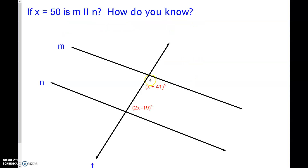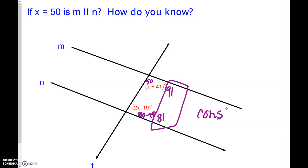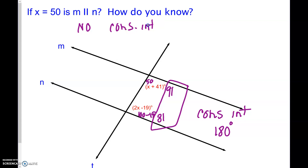Let's put 50 in. So it looks like one angle is 91 degrees, and this one is 100 minus 19, which is 81 degrees. Because these are consecutive interior angles, we're looking to see that they equal 180 degrees — that they are supplementary. 91 plus 81 is not 180, so we're going to say no — consecutive interior angles are not supplementary. Because those angles are not supplementary, there is no way that M can be parallel to N.